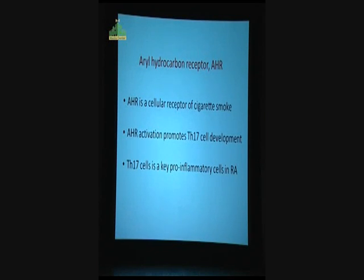Let me bring to you one particular receptor called aryl hydrocarbon receptor. Professor Wu actually referred to that yesterday. AHR is a cellular receptor of cigarette smoking. AHR activation promotes TH17 cell development. This is a very recent discovery - two back-to-back papers in Nature about four years ago. Also, some years ago, TH17 cells have been shown to be a key pro-inflammatory cell in RA. So there is a complete rational linkage there.